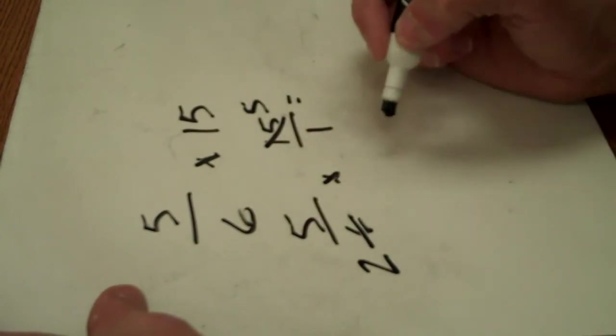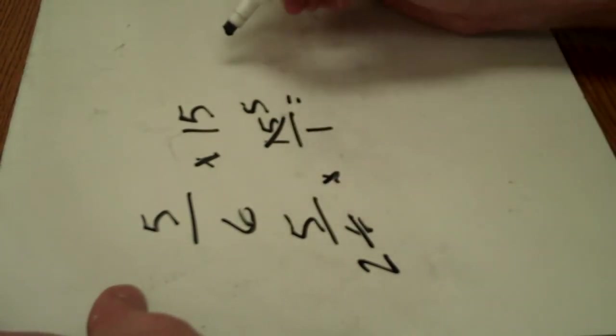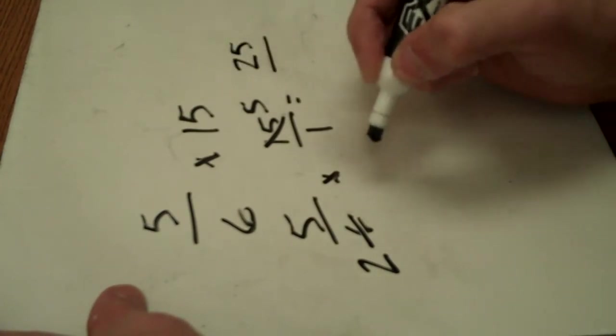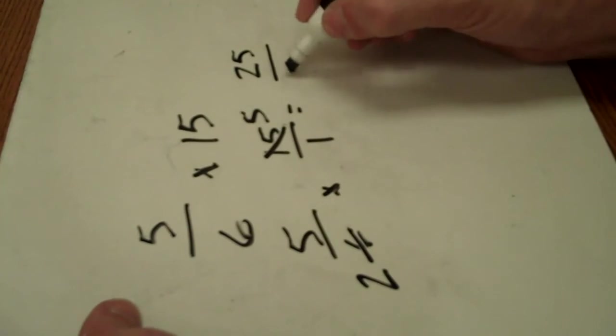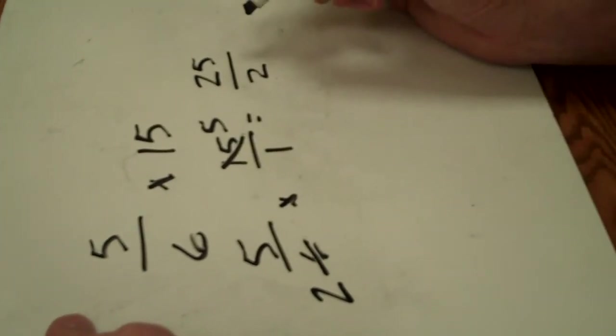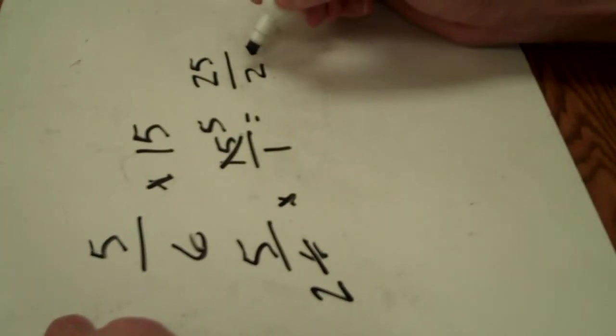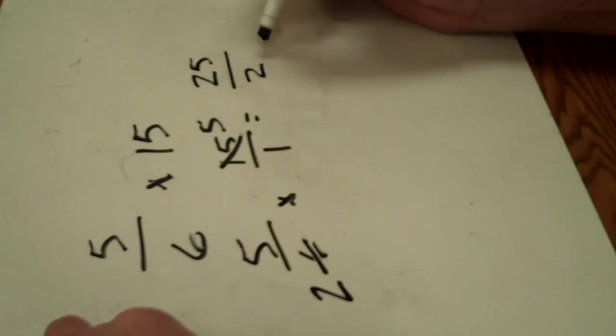And that's pretty much it. Then multiply straight across. 5 times 5 is 25. 2 times 1 is 2. Now, we ended up with an improper fraction and we're not finished. Improper fraction, this top number is larger than the bottom number.